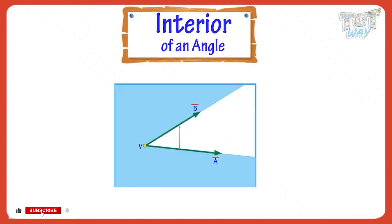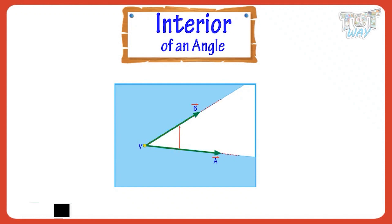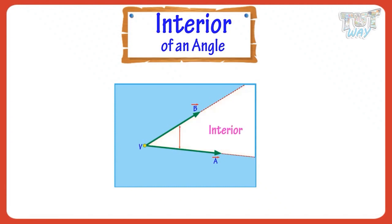Interior is the space between two straight lines. It extends even beyond the ends of line segments. Here, the white area is the interior of the angle.